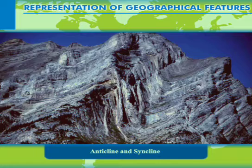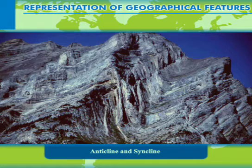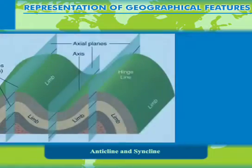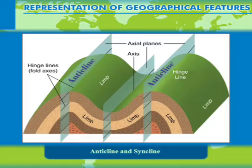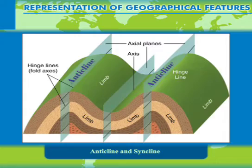Fold mountains are mountains formed mainly by the effects of folding on layers in the upper part of the earth's crust. The part of the fold rising upwards is called an anticline, and the part of the fold which sinks downwards is called a syncline.